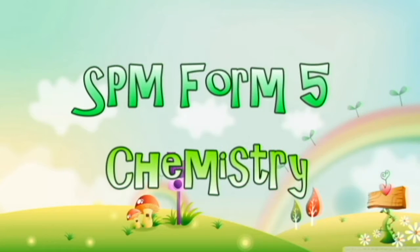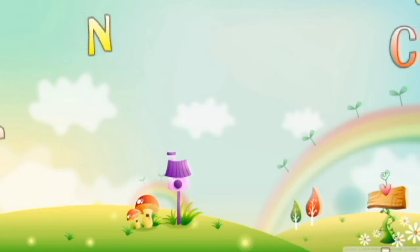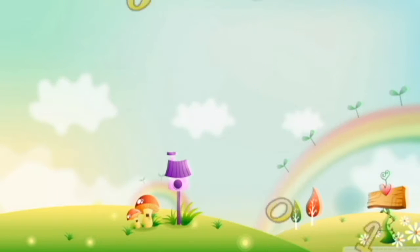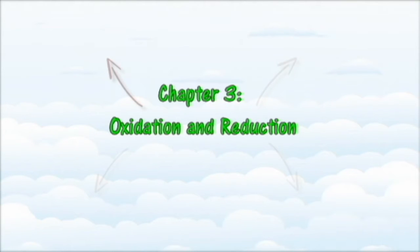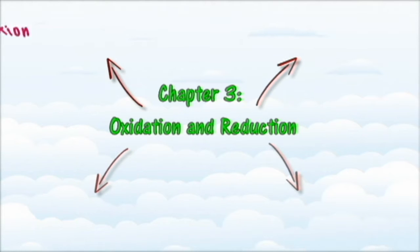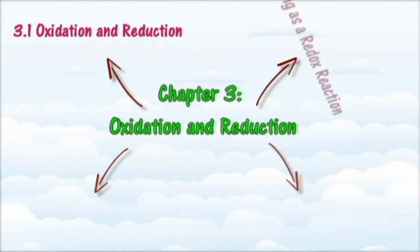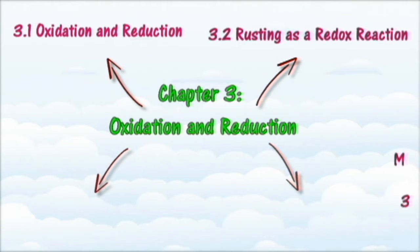SPM Form 5 Chemistry, Chapter 3: Oxidation and Reduction. In this video we will summarize the expected learning outcomes of Chapter 3 in the form of a concept map. Oxidation-reduction reactions, or simply redox reactions, occur if a chemical reaction involves the loss or gain of electrons. In this chapter we will learn more about oxidation and reduction.